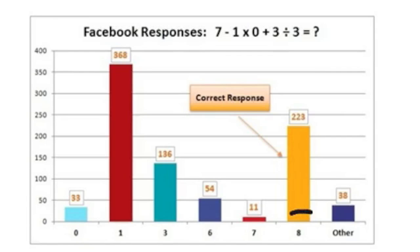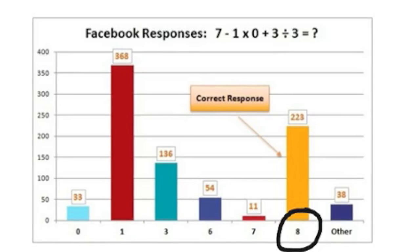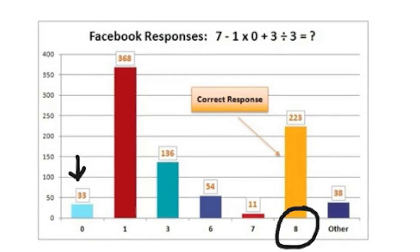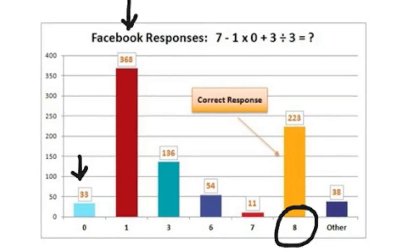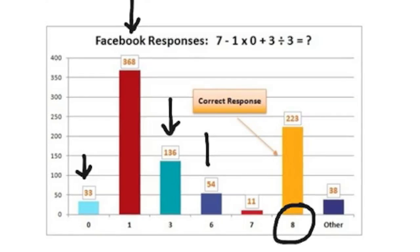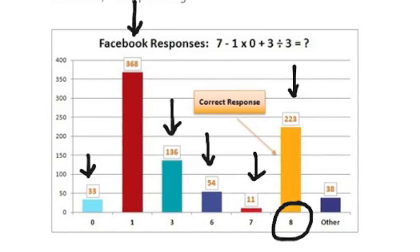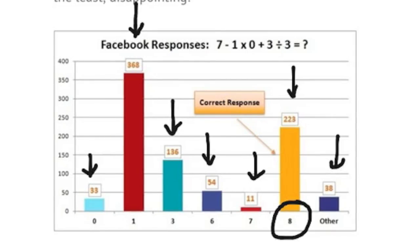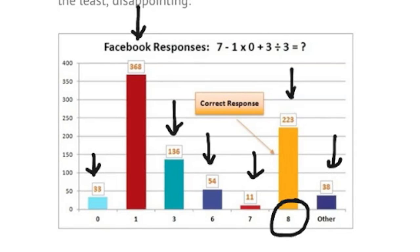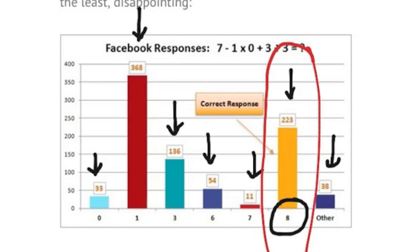And the correct answer is 8. If you followed the order of operations, you should have gotten 8. Now take a look at this graph: 33 people said the answer was 0; 368 people — the most popular wrong answer — said 1; 136 people said 3; 54 said 6; 11 people said 7; 223 said 8, which is the correct answer; and 38 people chose a completely different number. Where do you fall? I hope you fall in the correct category. I hope this video helped. If you have any questions, feel free to email me. Thanks.